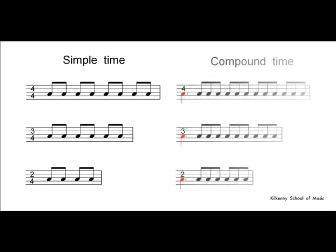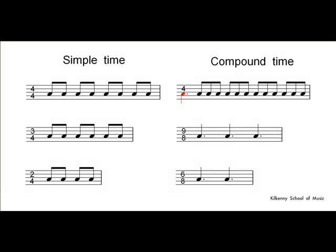When we come to the compound time signatures, we have a problem, because there is no traditional number for a dotted crotchet. So you just have to learn that we write six eight for two dotted crotchet beats in a bar, nine eight for three dotted crotchet beats in a bar, and twelve eight for four dotted crotchet beats in a bar.